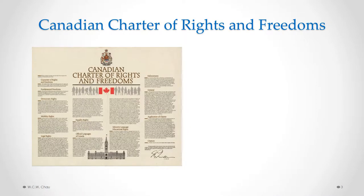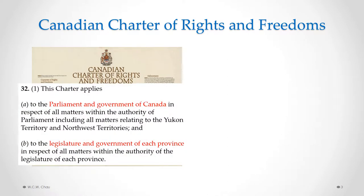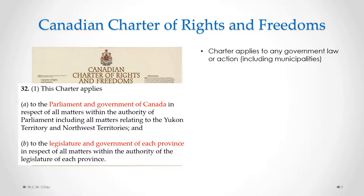The Canadian Charter of Rights and Freedoms is meant to protect our human rights, but it does not protect those rights from being infringed by just anyone. It only applies to governments in Canada, because of Section 32, Subsection 1 of the Charter, which says, essentially, that the Charter applies — under Paragraph A — to the federal government, and under Paragraph B — to each of the provincial governments in Canada.